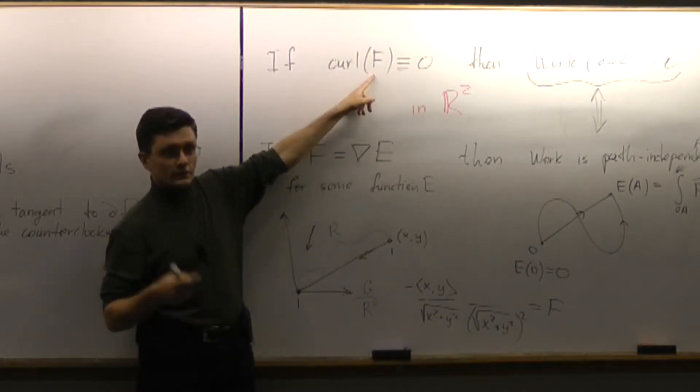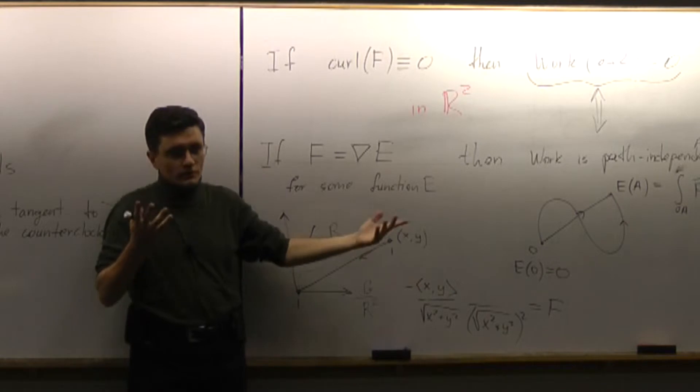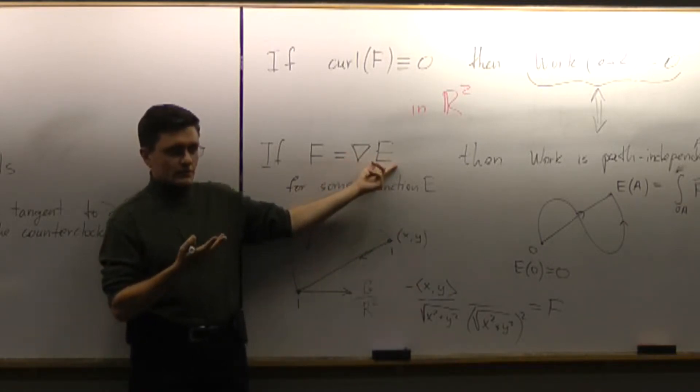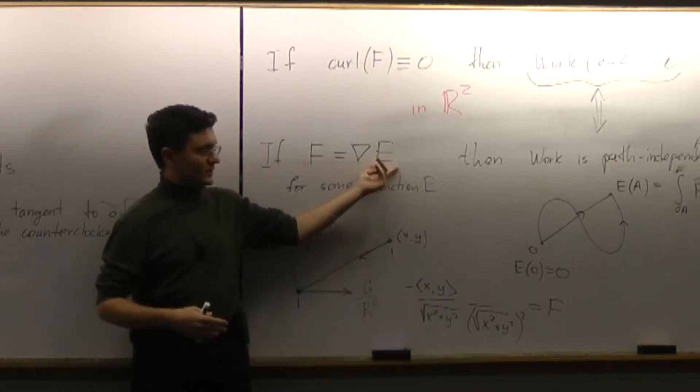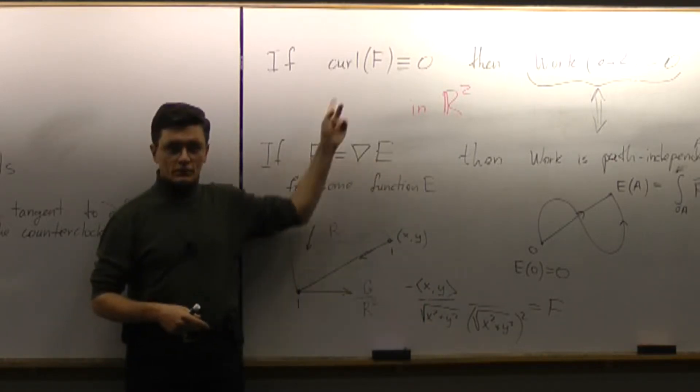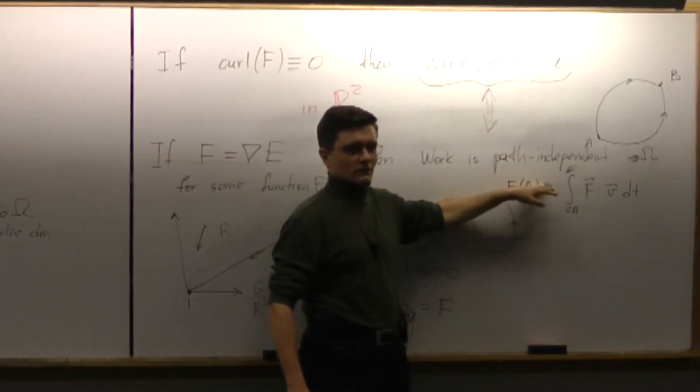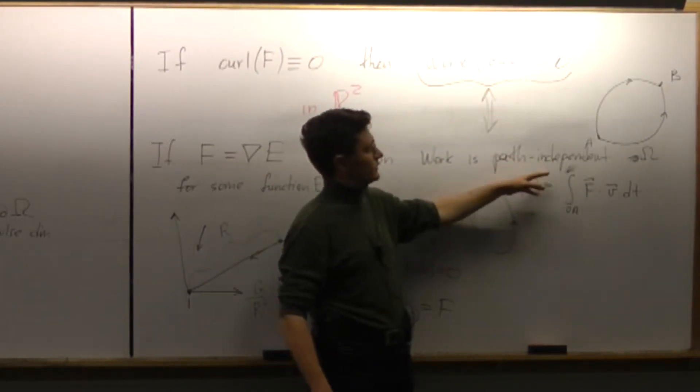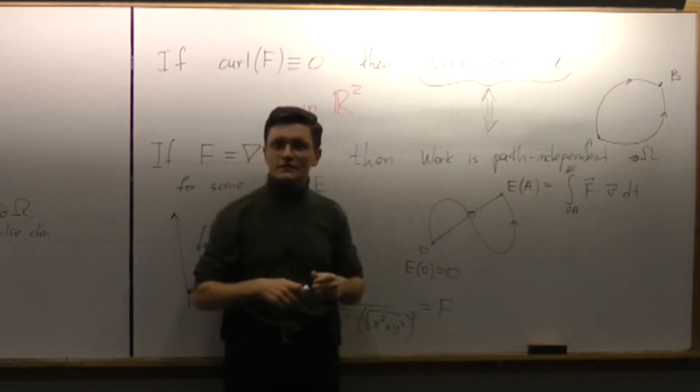So you check that and you conclude your vector field is potential. You don't know at that point what the potential function is. You still have to do some work to figure out what it is. But you can definitely conclude immediately that you have independence of path and you have integral over any closed path equal to zero.